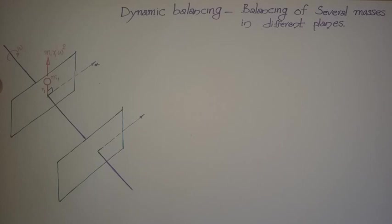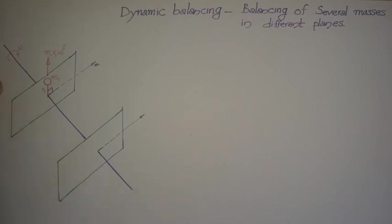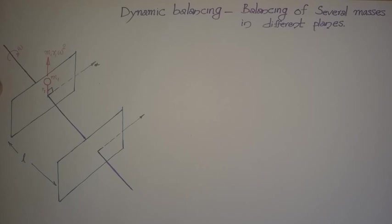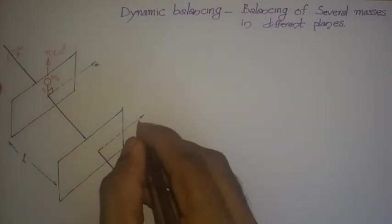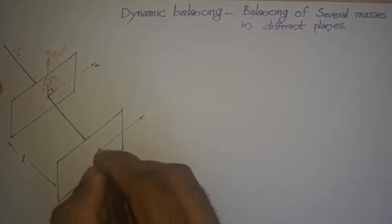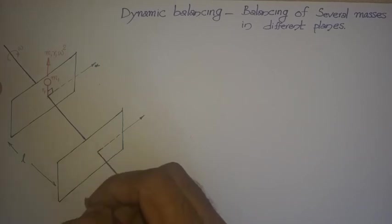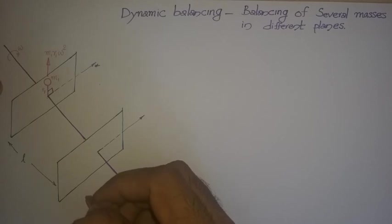In dynamic balancing, we make use of a balancing mass placed in another plane. This other plane is at a distance L from the first. Suppose L is the distance between the two reference planes. In this second reference plane, the x-direction is also considered, and a mass must be added to achieve balance.